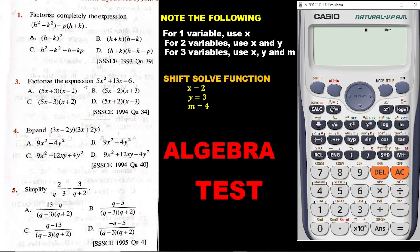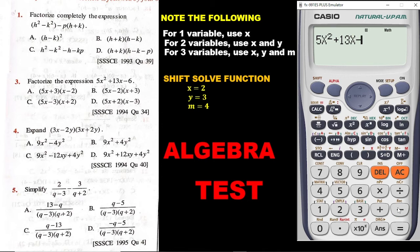Factorize the expression 5X squared plus 13X minus 6. Thankfully, this already has X as a variable, so let's enter it straight away on the calculator. We have 5, then alpha X, then square that, then plus 13, then alpha X, and then minus 6.